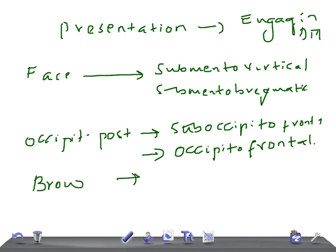Then we have brow presentation. If the presentation is brow, what will be the engaging diameter? It's mental vertical (MV).